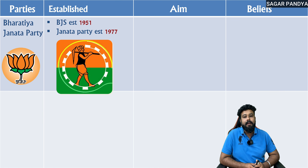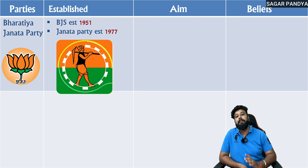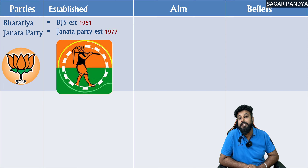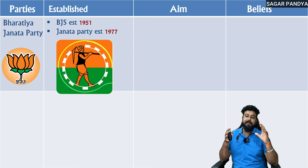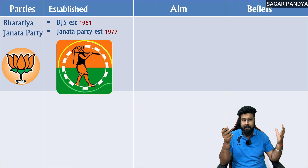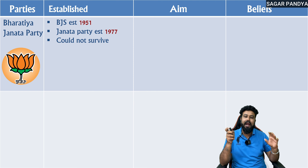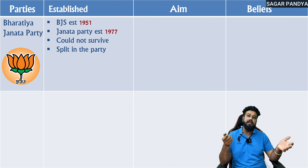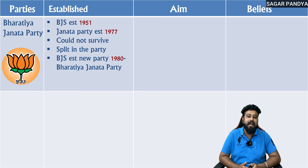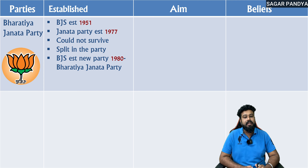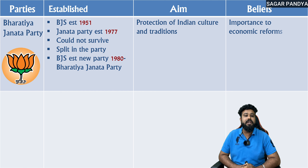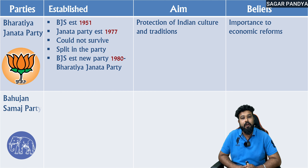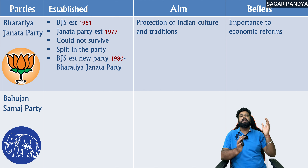The Bharatiya Janata Party (BJP) — originally there was a party called Bharatiya Jana Sangh, established in 1951. After independence it merged with Janata Party, which was formed in 1977 when all opposition parties came together to challenge the single dominant party system. But internal differences emerged and the party could not survive. There was a split, and Bharatiya Jana Sangh formed a new party in 1980 called the Bharatiya Janata Party (BJP). Their main aim is protection of Indian culture and tradition, and they believe in the importance of economic reform — bringing about changes in the economy.